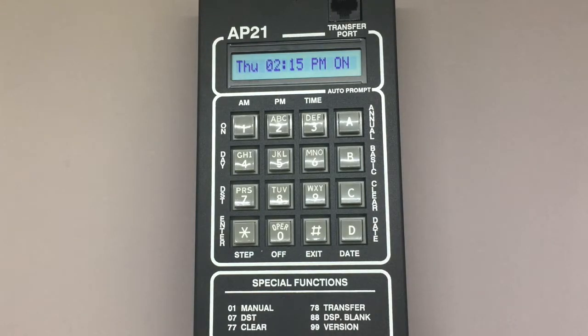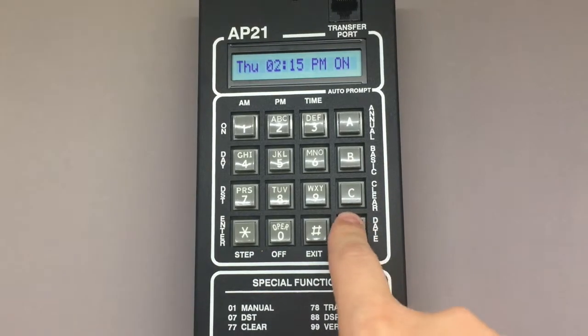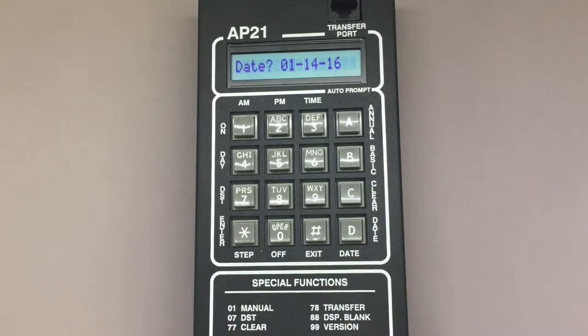To access the date input screen, press D, star from the home screen. On this screen, you'll see the cursor on the month input.